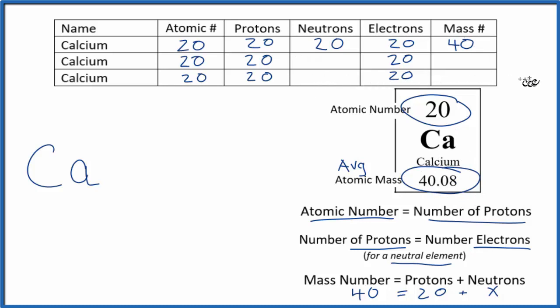So the other two isotopes for calcium, the two major ones, one is calcium 42. And in fact, let me name it based on the mass number. So this is calcium 42, and this is calcium 40.